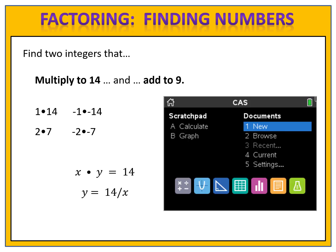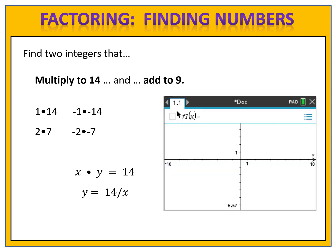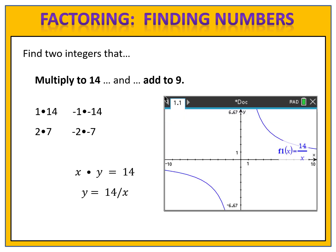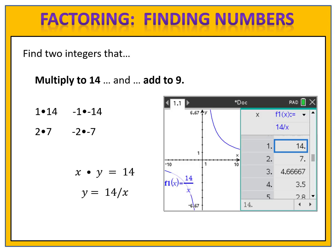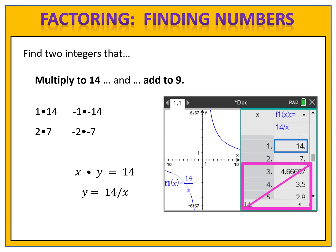If we go into our graphing calculator, start a new document, and add a graph, then put in the function 14 divided by x and hit enter, we get a graph. But I'm not interested in the graph — what I'm interested in is the table. The pairs of numbers given in the table are numbers that multiply to 14: 1 times 14, 2 times 7. You'll notice there are other numbers involving decimals or fractions, and I'm not interested in those because I'm looking for integers.